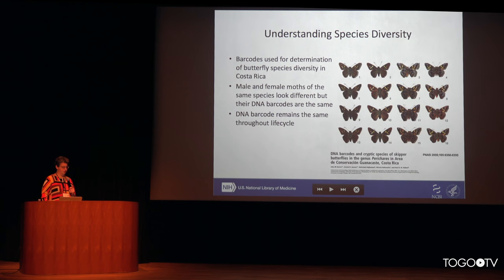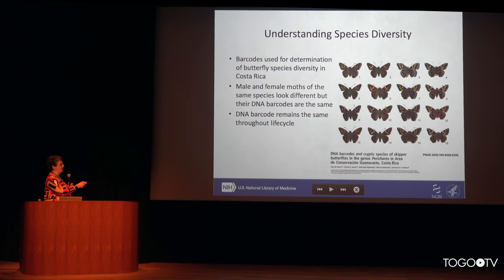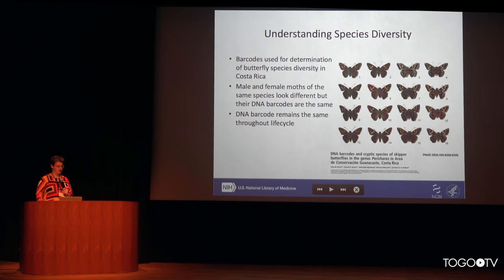One practical function of using barcode sequences is to understand species diversity. This is a study in Costa Rica of butterflies, where each row represents a single species. The first and third columns are the males, dorsal and ventral view, and the second and fourth are females. You can see that within a single species, the spotting patterns of the males and females are different. The males all look more similar to each other, and the females look more similar to each other, but by doing the DNA barcoding they were able to discern that these are four different species.